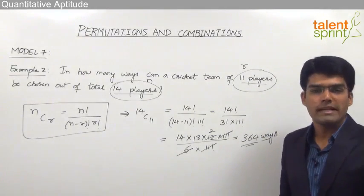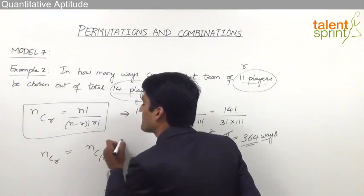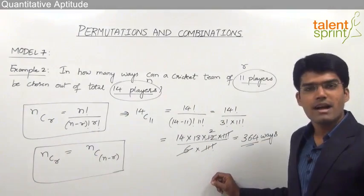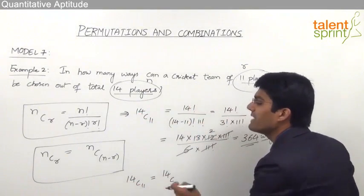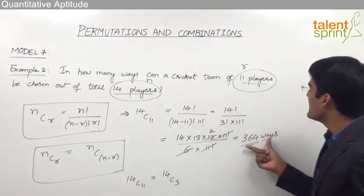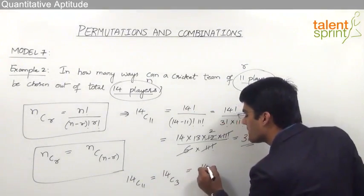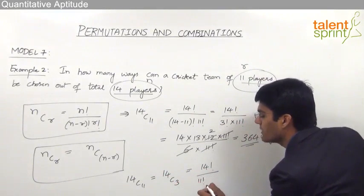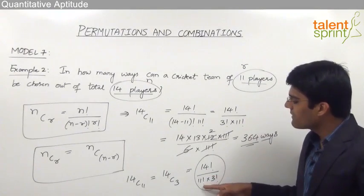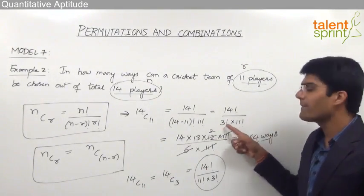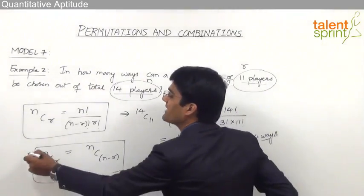One important point: nCr is always equal to nC(n minus r). For example, 14C11 = 14C(14 minus 11) = 14C3. We know 14C11 = 364; let us verify 14C3. 14C3 = 14 factorial by (14 minus 3) factorial into 3 factorial = 14 factorial by 11 factorial into 3 factorial. Comparing 14C3 and 14C11, both equal 14 factorial by 3 factorial into 11 factorial — they are identical. So nCr = nC(n minus r), which can be helpful in doing certain calculations very fast.